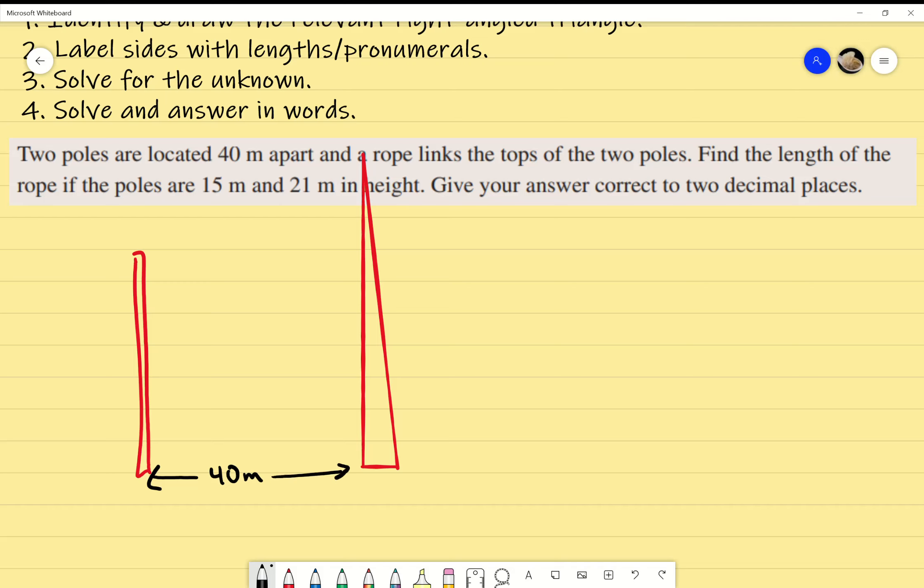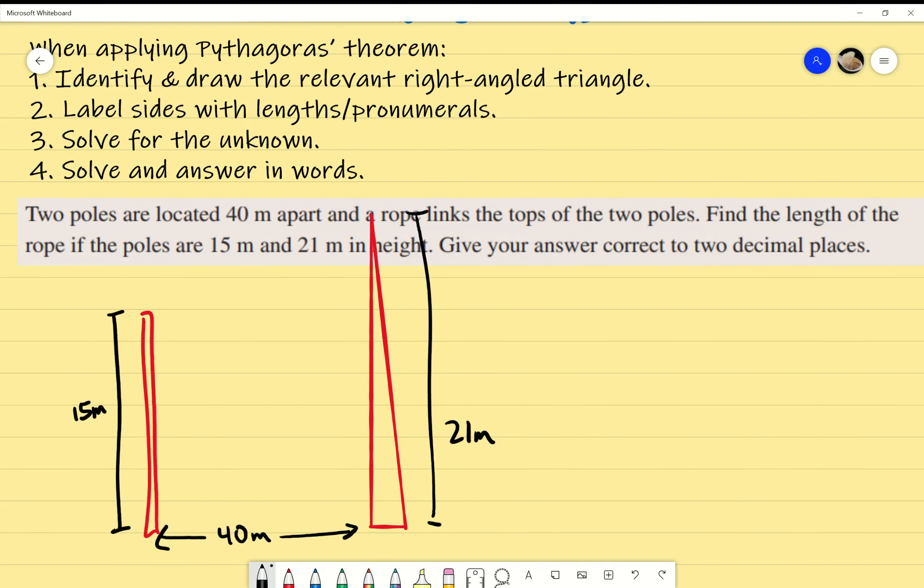And it says, find the length of the rope if the poles are 15 meters and 21 meters in height. So this one right here would be 15 and this one is 21 meters. Finally, to answer correct to two decimal places. Now, what was the first step required when it came to using Pythagoras theorem? We need to identify and draw the right angle triangle. Where is the right angle triangle? At the top, isn't it?